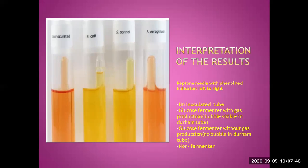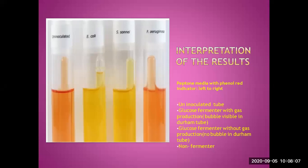If there is a bubble in the gas, it means that there is gas production. The second tube shows fermentation plus gas production. The third tube shows fermentation only. The first tube has no color changes and there is no gas production in it.